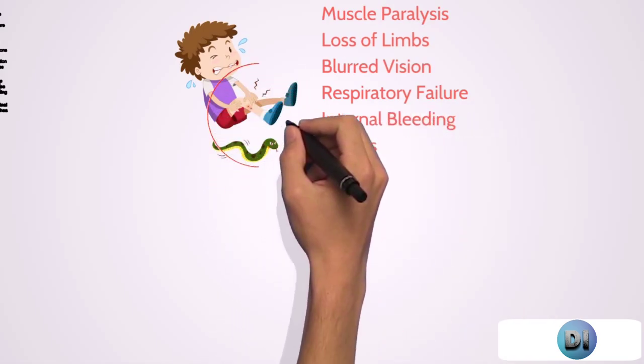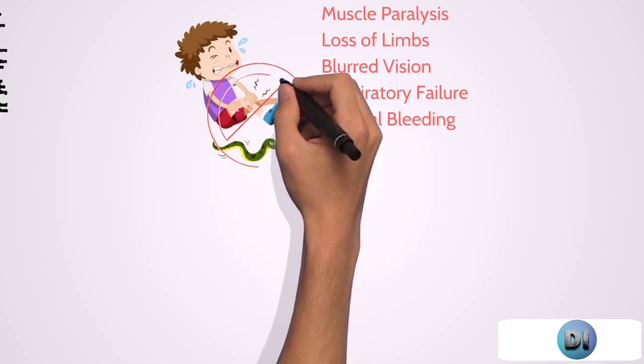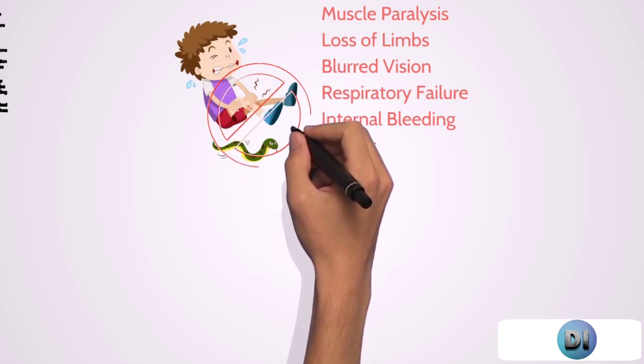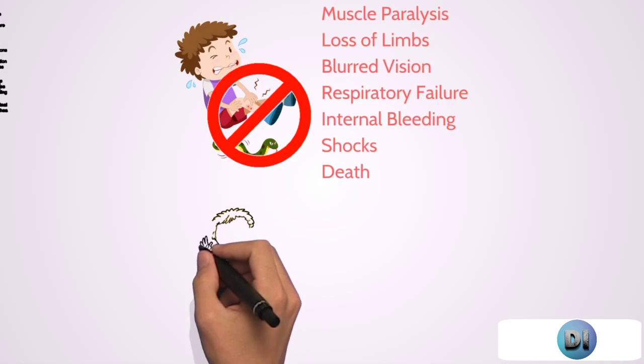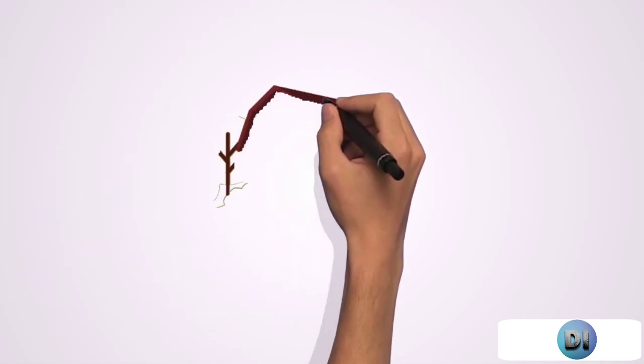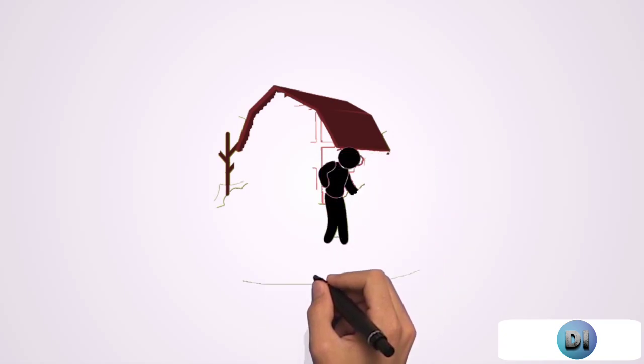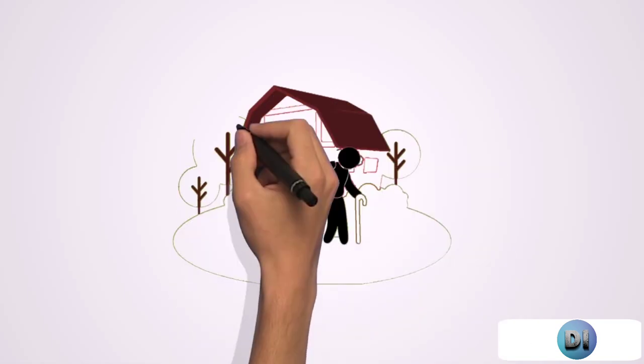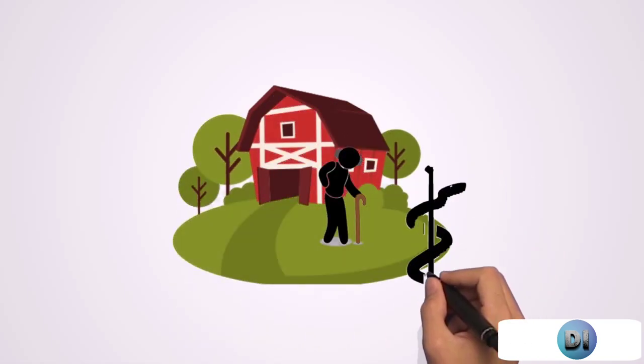It is best to avoid snakebites, and you can do that by not provoking them if you happen to cross their path. Pay attention to where you walk. A snake likely won't bite unless you step on it. If you are on the field or farmland, carry a walking stick to tap the ground in front of you. If a snake feels threatened, it will be more likely to attack the stick.